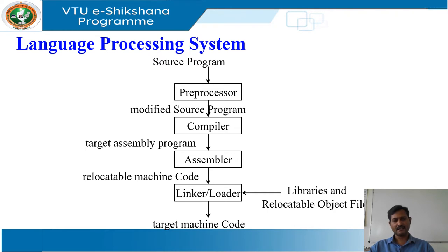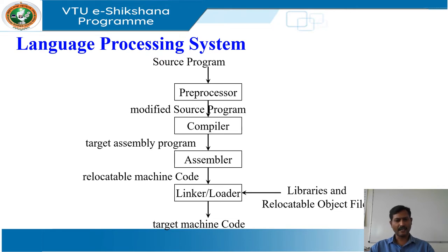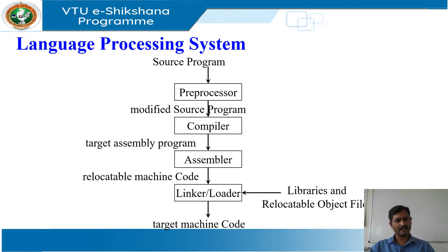The assembly language is then processed by a program called an assembler that produces relocatable machine code as its output. Large programs are often compiled in pieces, so the relocatable machine code may have to be linked together with other relocatable object files and library files into the code that actually runs on the machine. The linker resolves the external memory addresses, and the loader then puts together all of the executable object files into memory for execution.